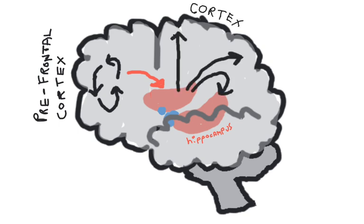To help the hippocampus decide which short-term memories are worth storing and which aren't, the emotional centers of the nucleus accumbens and the amygdala can help. The nucleus accumbens is activated when we experience pleasurable emotions, while the amygdala is typically activated when we experience negative emotions.